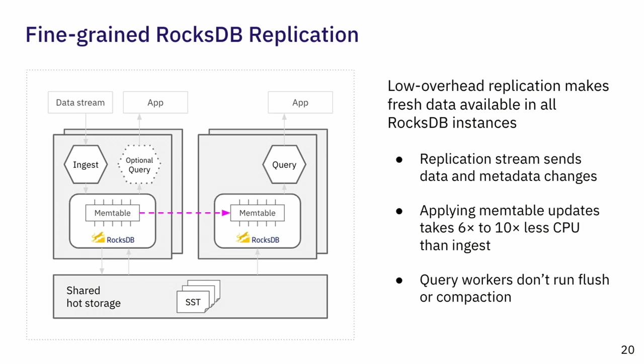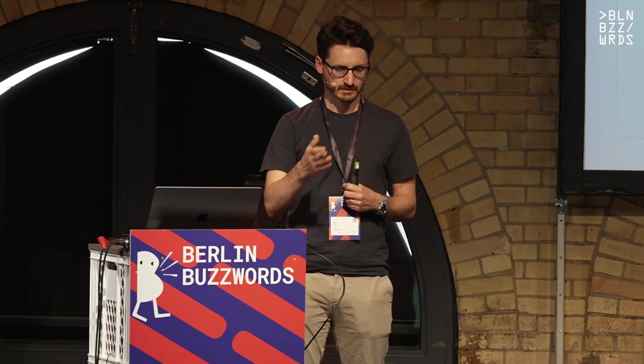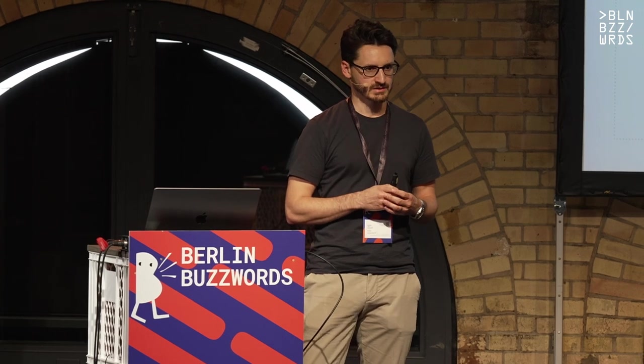The key insight here is that turning the logical update into physical deltas is much more expensive than applying the physical delta to the RocksDB memtable. So the way we isolate ingest compute from query compute is: the ingest worker turns logical updates into physical deltas; the query worker doesn't do that. The query worker takes the physical deltas and applies them to the memtable. That's about an order of magnitude difference in cost.